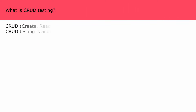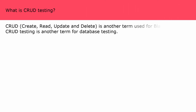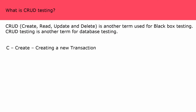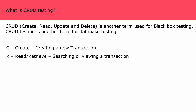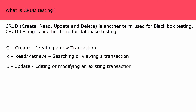What is CRUD testing? CRUD — Create, Read, Update, and Delete — is another term used for black box testing, and is also another term for database testing. C: Create — creating a new transaction. R: Read or Retrieve — searching or viewing a transaction. U: Update — editing or modifying an existing transaction. D: Delete — deleting a transaction from the database.